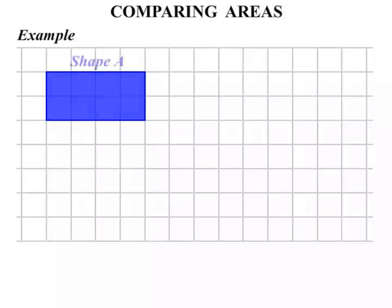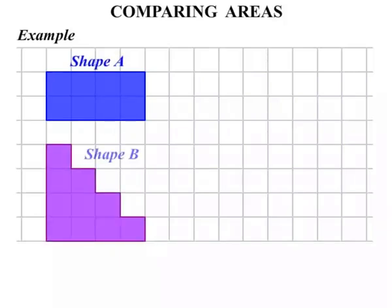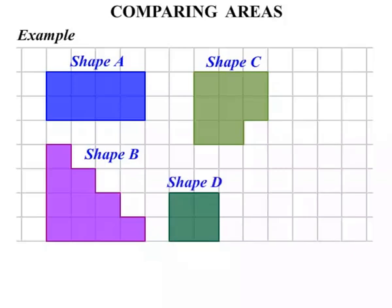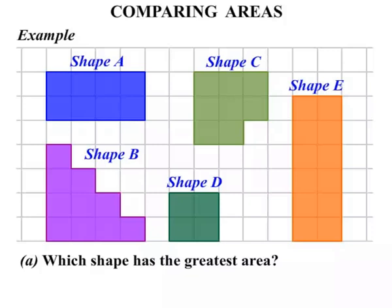The first one there, Shape A. Shape B. Shape C. Shape D. Shape E. In Part A we're asked which shape has the greatest area. Let's work out each area firstly.